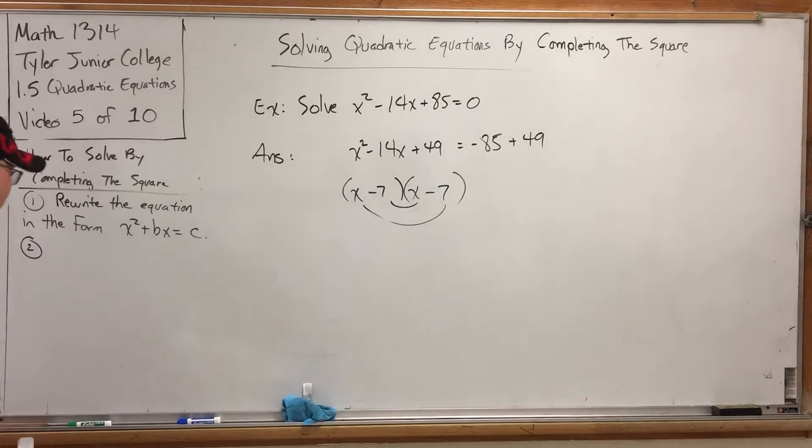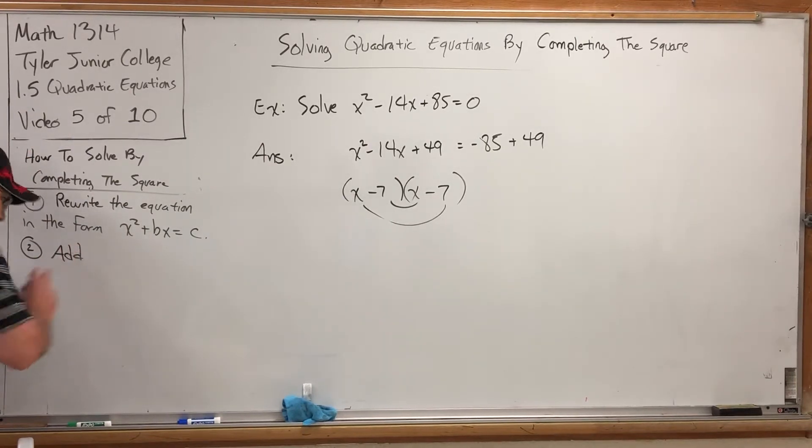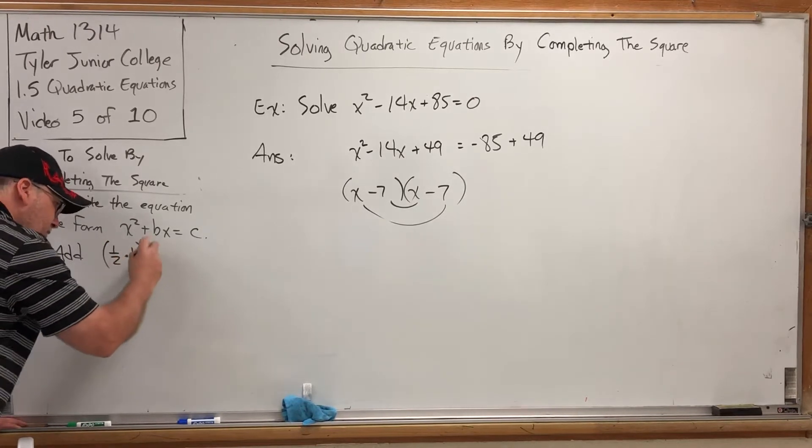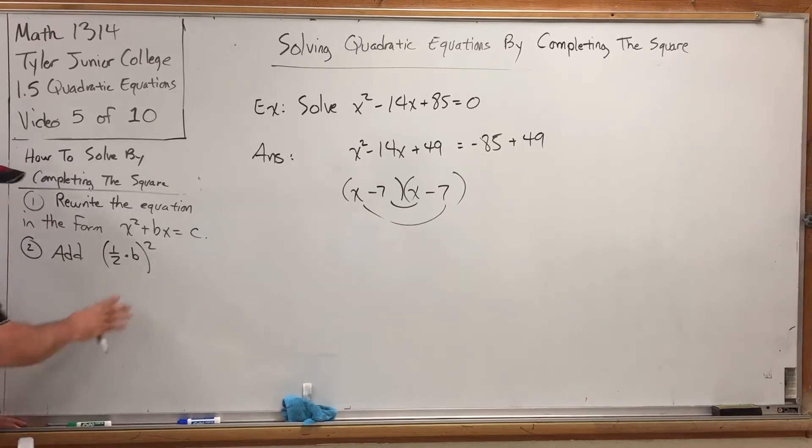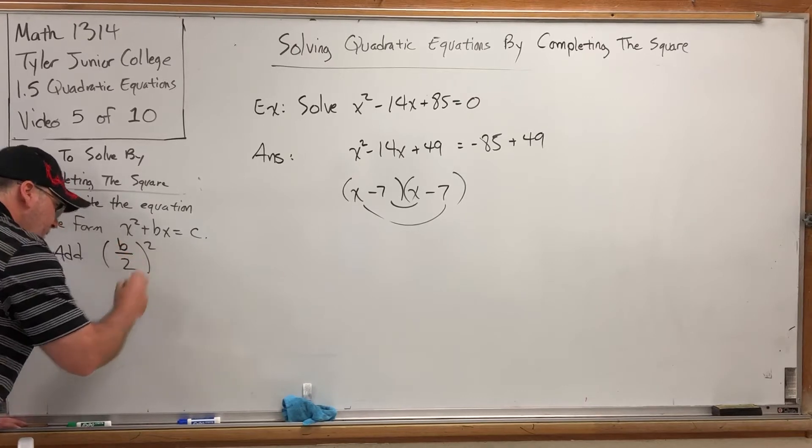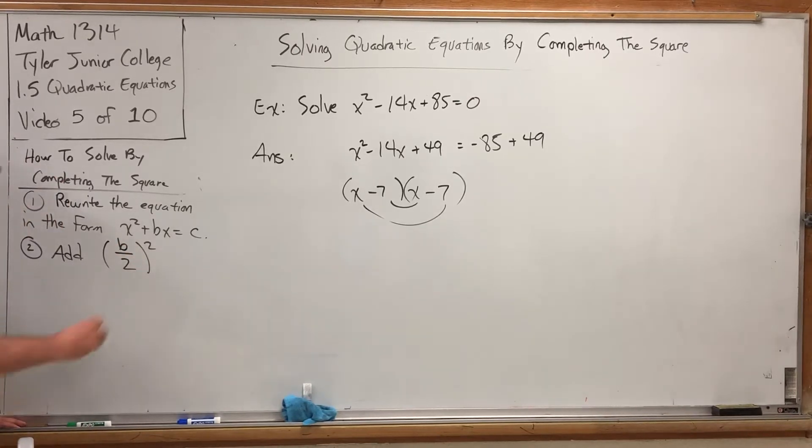So, how can we write this here? We're going to add something to both sides. 1 half times b squared. You know what? I can write that more cleanly. 1 half times b is just b over 2. Now, that's a b, not a 6. To both sides.